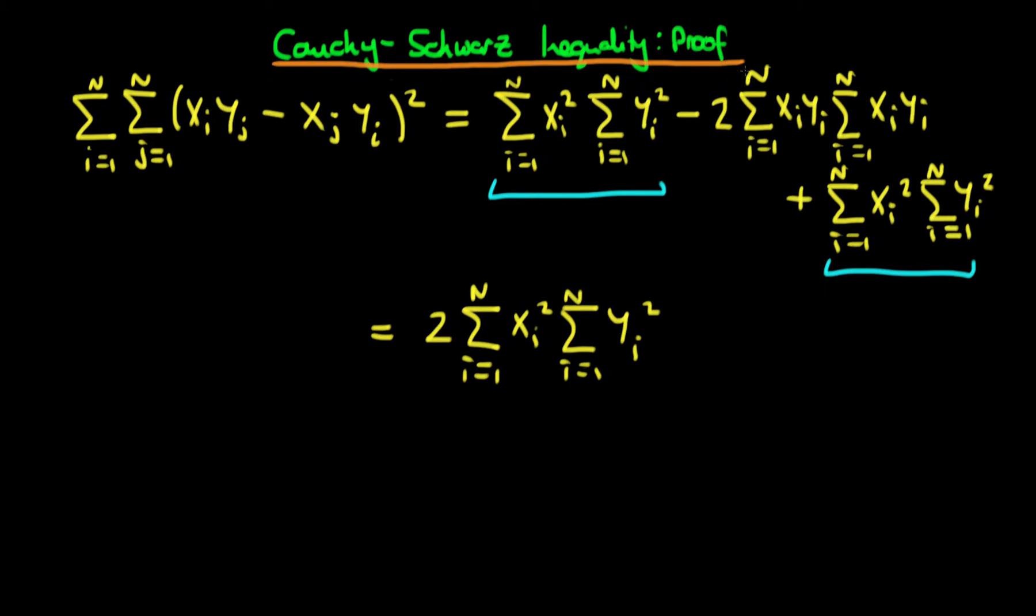Then what we do is we notice that for this second term, the first part of the second term is exactly the same as the second part. So we can rewrite this second term as just being minus 2 times the sum from i equals 1 to n of xi times yi. And then what we need to do is we need to square this entire expression.